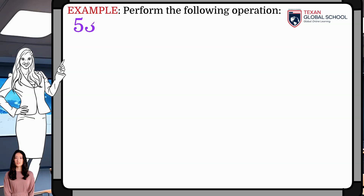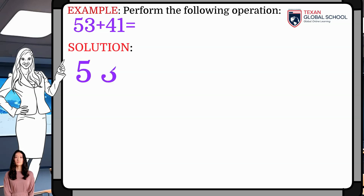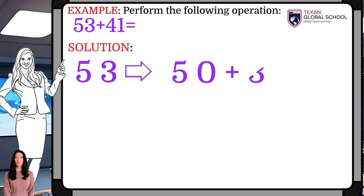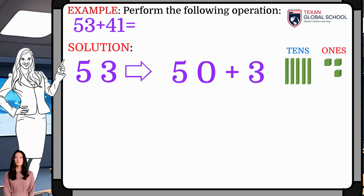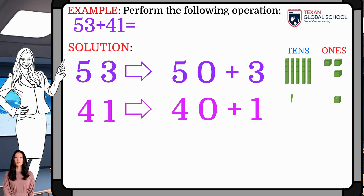In this other example, we will perform the addition of 53 plus 41. First, decompose each addend into 1s and 10s. 53 has 3 1s and 5 10s. 41 has a 1 and 4 10s. We will use the bars in each case to see the model.